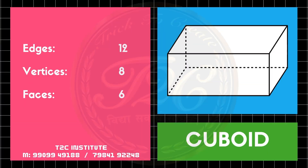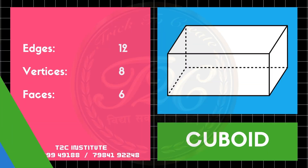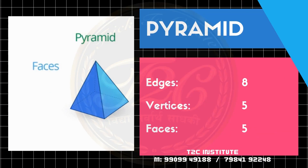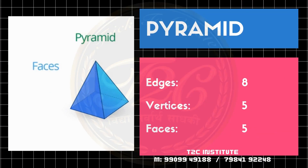Cuboid will be having similar structure like cube. Whereas in pyramid, you can see there will be five faces. If we talk about corners or vertices, it will be having five vertices and eight edges.